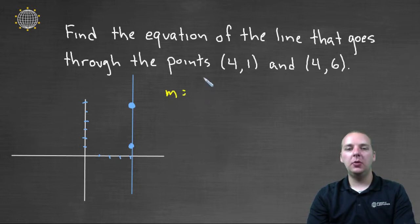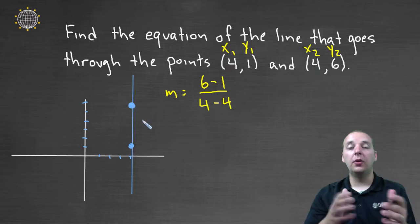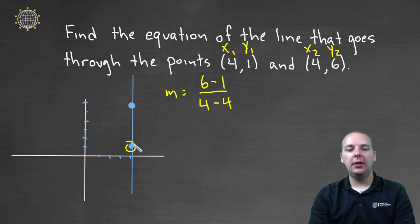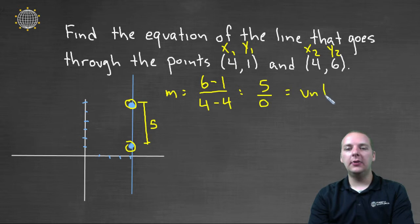The M would be y2 minus y1 over x2 minus x1. Where this is x1, y1, the first point, and this is x2, y2, the second point. And this will give us the rise over the run between these two points. And between here and here, there's a rise of 5 and a run of 0. And we can see that. This is a rise of 5 units, but a run horizontally of no units. And so this says that your slope is undefined. It says our slope is undefined.